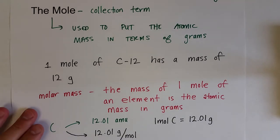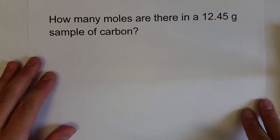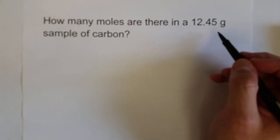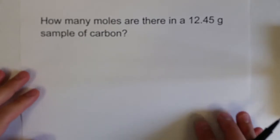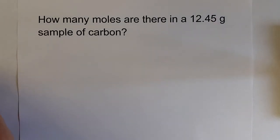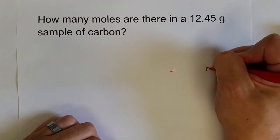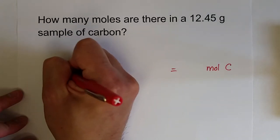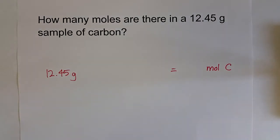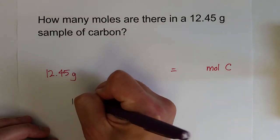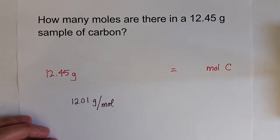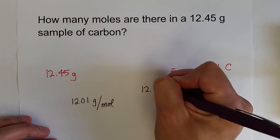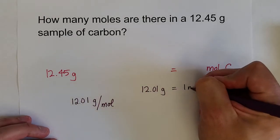So how do we use this? We can determine the number of moles a sample has if we know the mass. Let's say we have 12.45 grams of carbon. We're going to use dimensional analysis, just like metric conversions. We want to know how many moles of carbon are in this 12.45 gram sample. From the periodic table, 12.01 grams per mole is the molar mass for carbon — so 12.01 grams equals one mole of carbon.